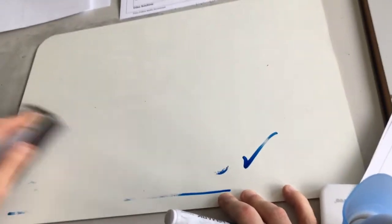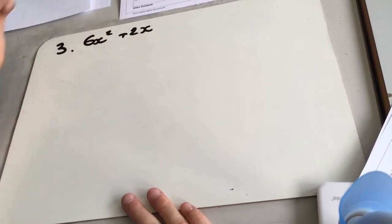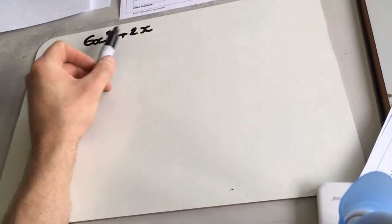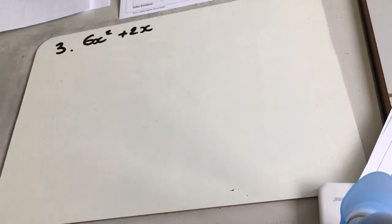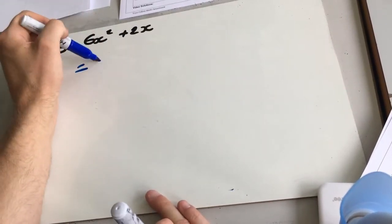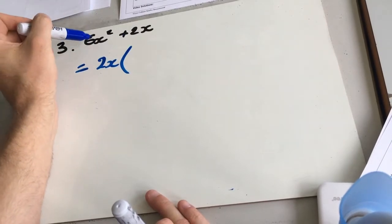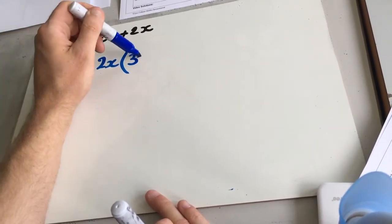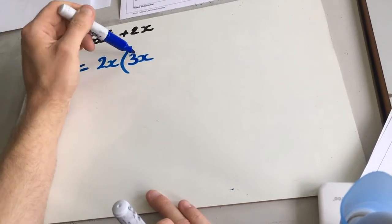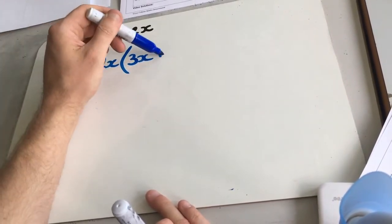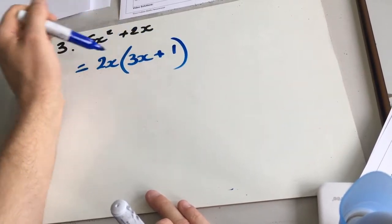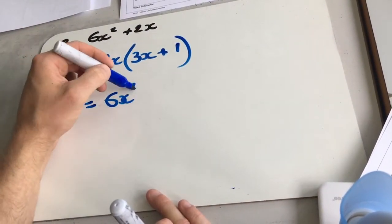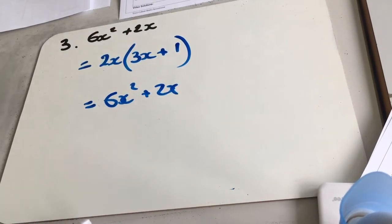Next one is actually a little bit easier — a common factor one. Number 3: 6x squared plus 2x. The hint says take out a common factor. What's a common factor of 6x squared and 2x? We can get a common factor of x, but also of 2, so we're going to take out 2x. What times 2x gives us 6x squared? We're left with 3x — 2 times 3 is 6, x times x is x squared. And dividing 2x by 2x leaves 1. So 2x(3x plus 1), giving us 6x squared plus 2x. Correct.